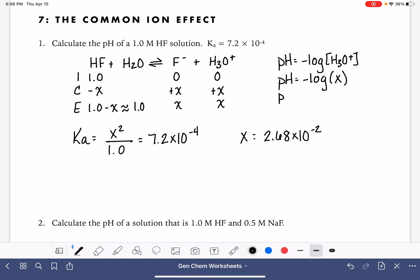That's our X value. So that's what we're going to use to do our pH calculation. Negative log of 2.68 times 10 to the minus 2, and our pH is 1.57. So that's the pH of this solution all by itself.